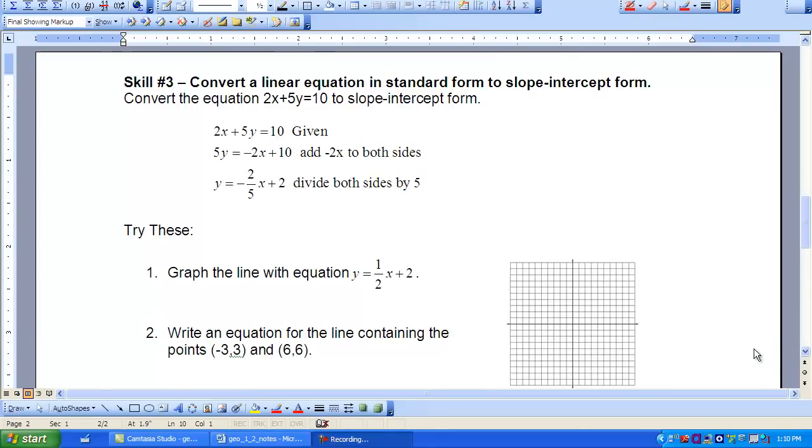The third skill you're going to be asked to perform in this lesson is to convert a linear equation in standard form to slope intercept form. So we're going to use the example of 2X plus 5Y equals 10. That's our standard form. And we're going to try and move that to slope intercept form. And we know slope intercept form is Y equals MX plus B. So Y being on the left and everything else being on the right.